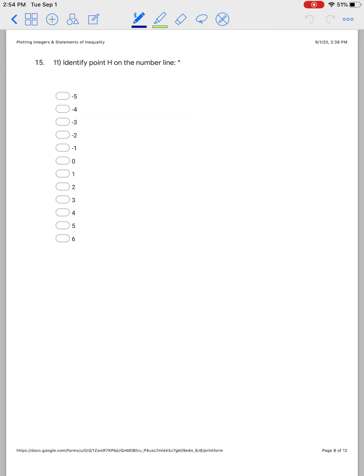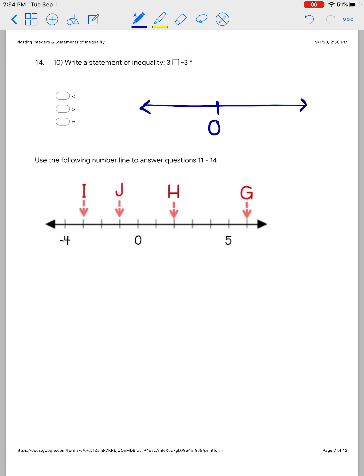Now the last ones, number 11, 12, and 13, you're just looking at this number line and identifying. So for number 11, it wants H. So I would say H is that point positive 2. And then number 12 is wanting a different point. So you just write those down. So that's how you show your work for this assignment.